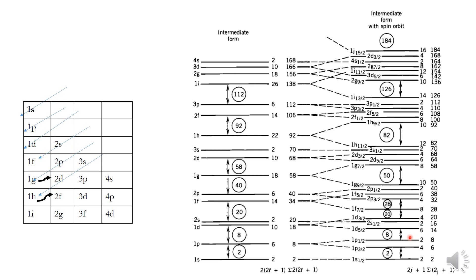This sketch is not arbitrary — the splitting of each level depends on its l value and the resulting energy difference. This is an exact prediction that matches experimental results. We can conclude that, using this intermediate potential together with spin-orbit interaction, the magic numbers corresponding to completely filled nucleon shells are fully explained.